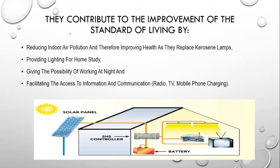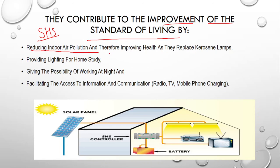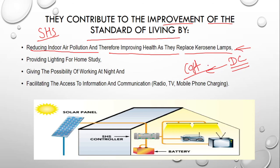Solar home systems contribute to the improvement of the standard of living. In very remote areas where electricity is still not available, such DC systems are very important. They reduce indoor air pollution and improve health by replacing kerosene lamps with cost-effective DC solar systems. Various subsidies are now available to promote solar energy in every country. They also provide lighting for home study for students and enable the possibility of working at night.